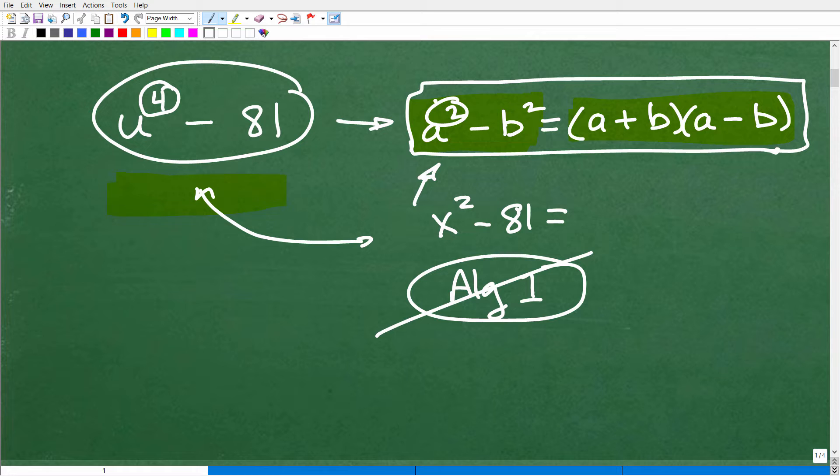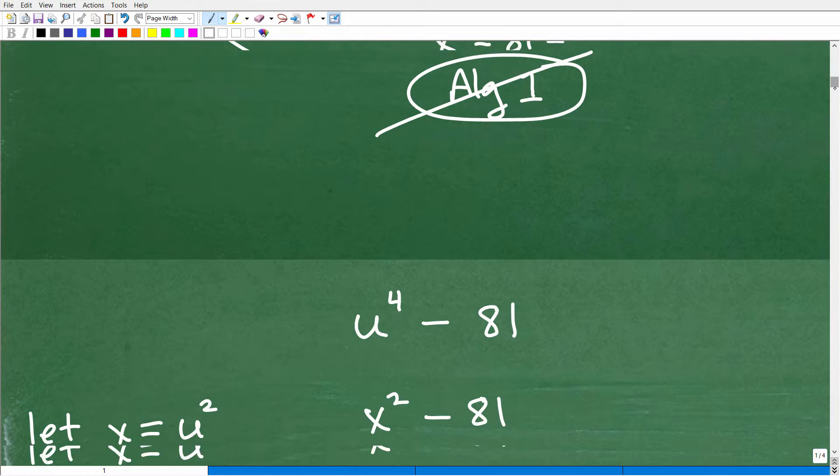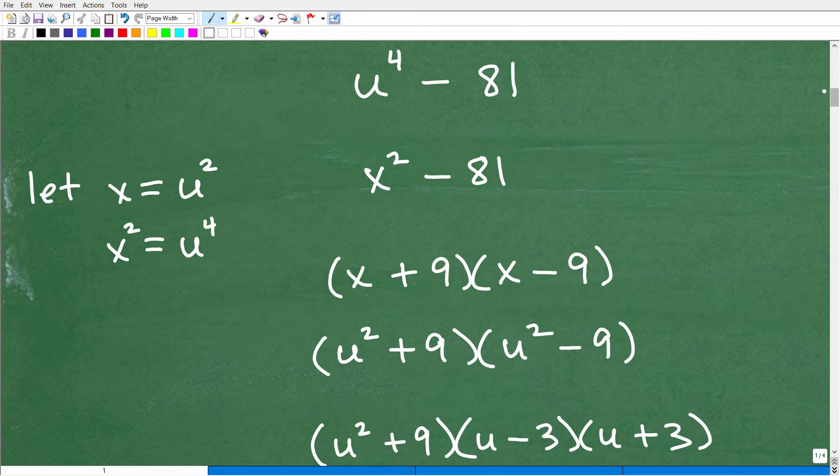Because this is a variable to the fourth power. This is a variable to the second power. Well, we can use substitution. So, this is how we do this. Let's go over here and take a look at this. What if I said let x is equal to u squared? So, we're talking about substitution. Now, if x is equal to u squared and I square both sides here, I get x squared and I get u to the fourth. So, these are two equivalencies I can make and this is going to be able to help me out.